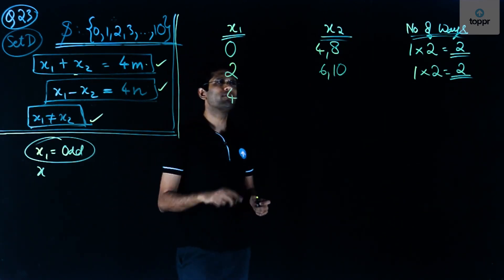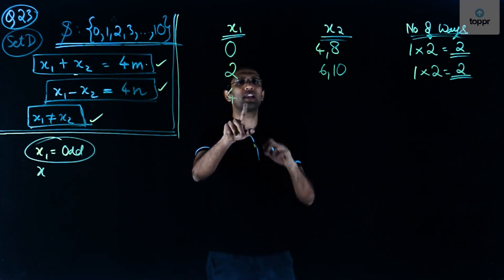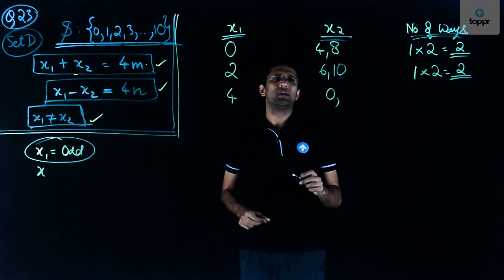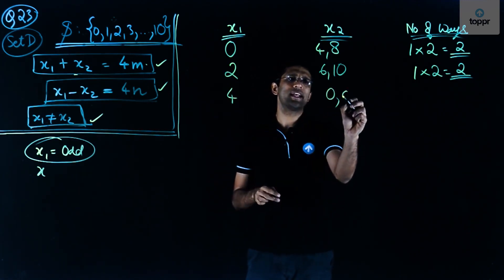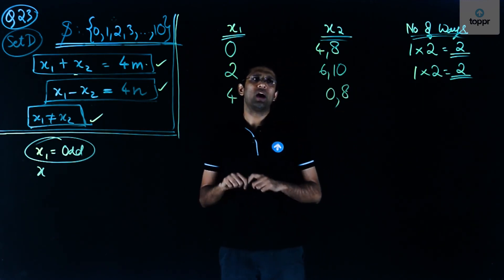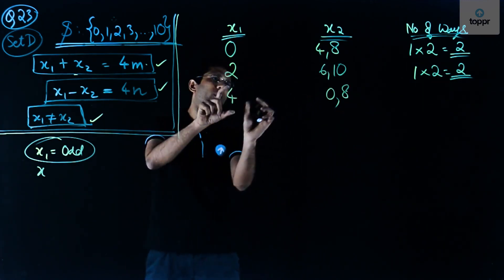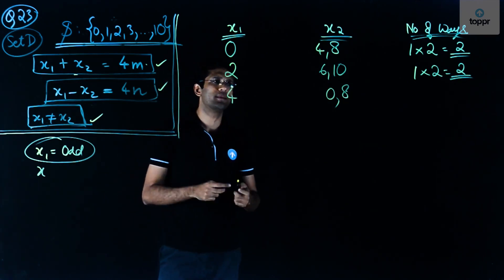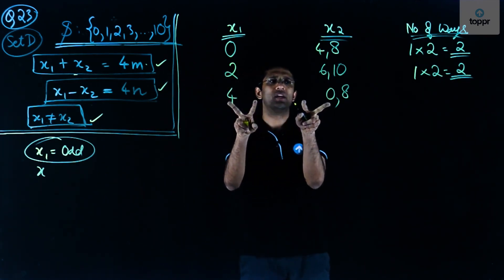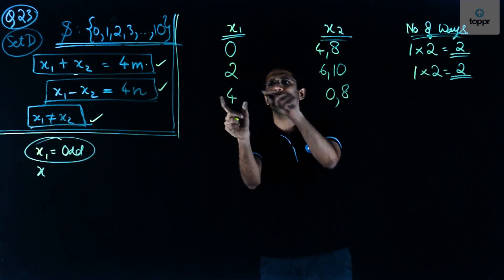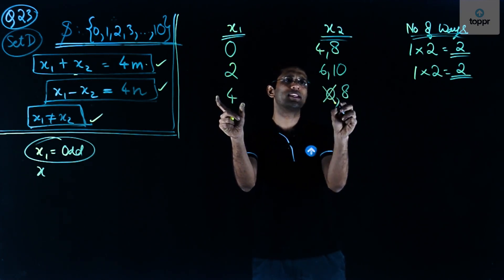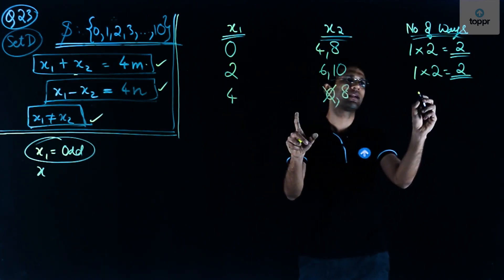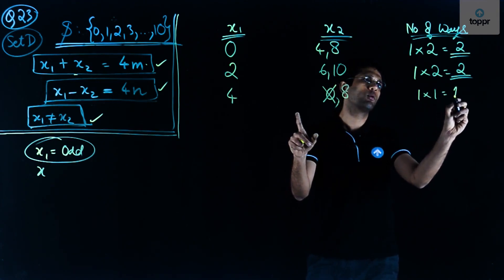If x1 = 4, the possible values of x2 are 0 and 8. However, the pair (0, 4) was already counted when x1 = 0, so we discount it. The only new case is x2 = 8, giving us 1 × 1 = 1 way.